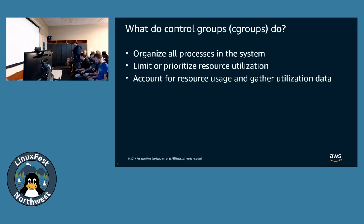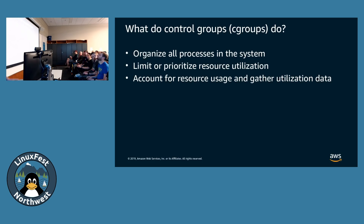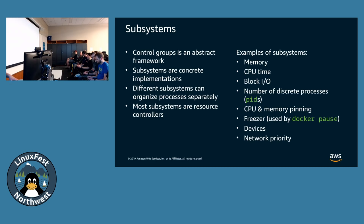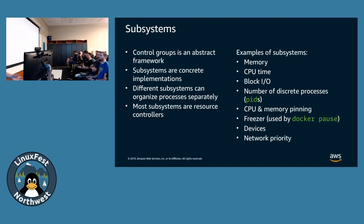We're going to talk about control groups first. Control groups — if you look at the Linux manual — are mostly about a way of organizing processes on the system. But the way they're used in practice is more as a way to limit and control resources available to running processes, and also to account for and gather resource utilization data. Cgroups are an abstract framework and there are concrete implementations called subsystems. Most of the subsystems you interact with are resource controllers, meaning they not just organize processes but also enforce something with those processes — things like controlling memory, CPU resources, access to devices, or the number of processes that can run.